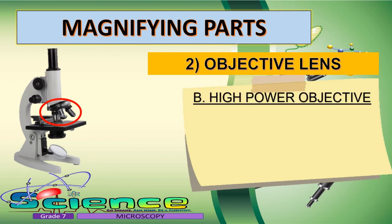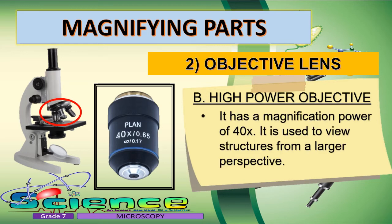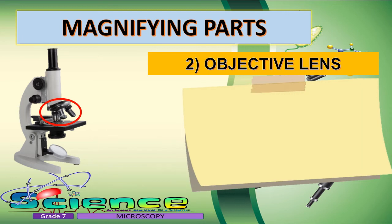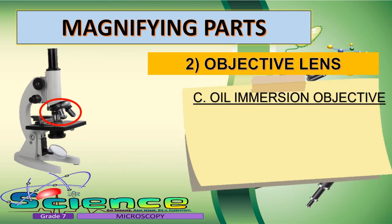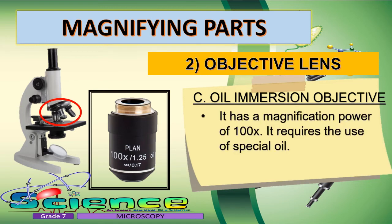The high-power objective has a magnification power of 40 times and is used to view structure from a larger perspective. The oil immersion objective has a magnification power of 100 times. It is usually the longest objective and is used to view bacteria, protists, and fungi. It requires the use of special oil.